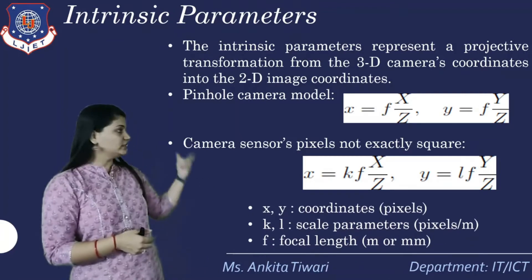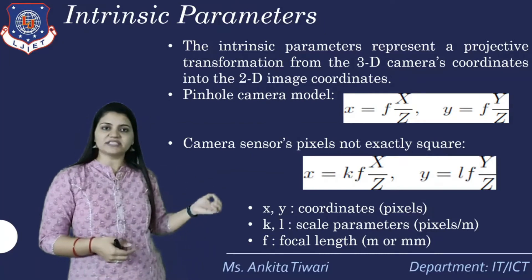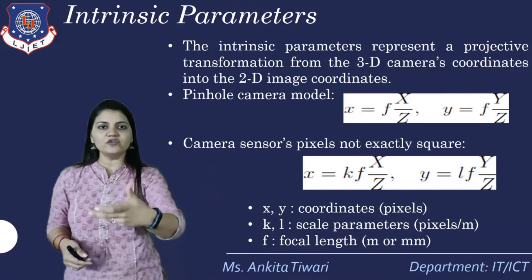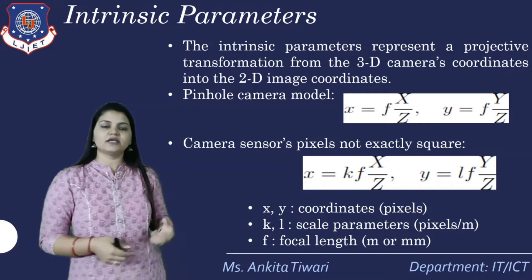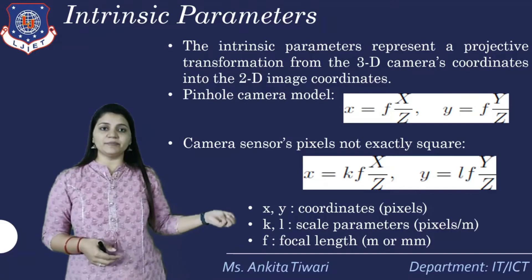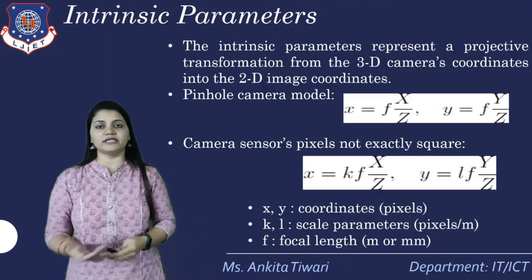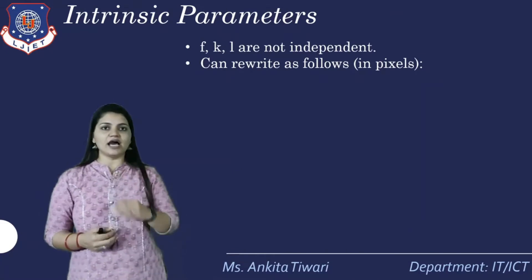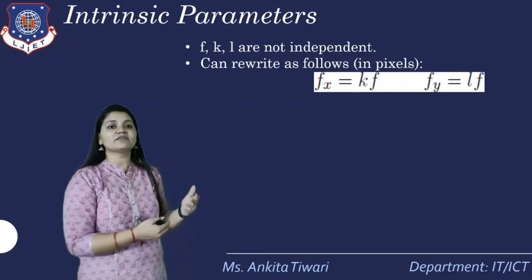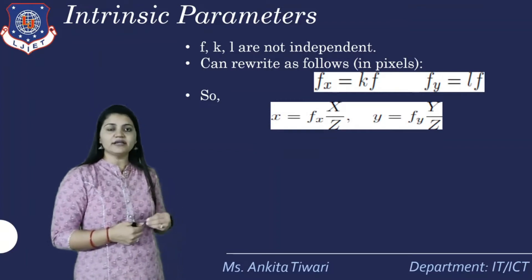The parameters in the equations are: x, y are pixel coordinates; k and l are scale parameters defining how you scale along x and y — pixels per meter or pixels per camera film unit; and f is the focal length defined in meters or millimeters. The intrinsic parameters f, k, l are not independent: fx = k·f and fy = l·f.